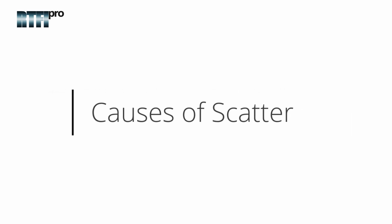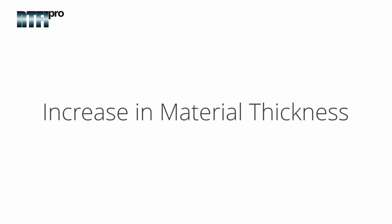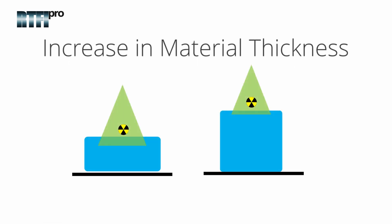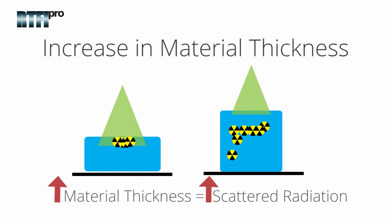Causes of scatter. First, increase in material thickness. Increasing the thickness of the component or weld under examination increases scatter radiation. As thickness increases it has much higher potential of photon scattering occurring within the thicker object than thin materials.